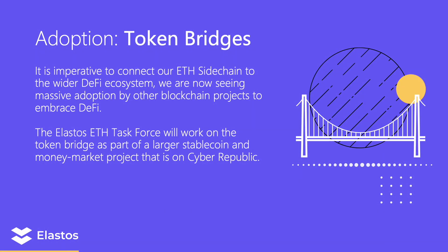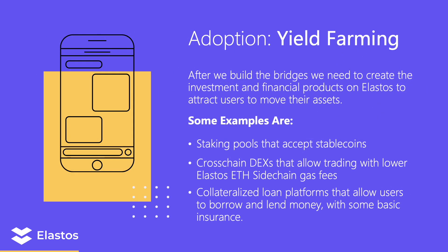Another way we want to drive adoption is through building token bridges. It's imperative to connect our Ethereum sidechain to the wider DeFi ecosystem. We're now seeing massive adoption by other blockchain products embracing DeFi and they're all building bridges themselves. The Elastos Ethereum Task Force will work on the token bridge as part of a larger stablecoin and money market project on Cyberpublic.